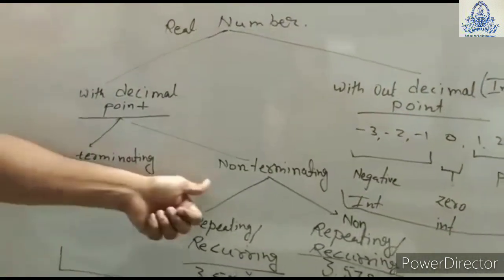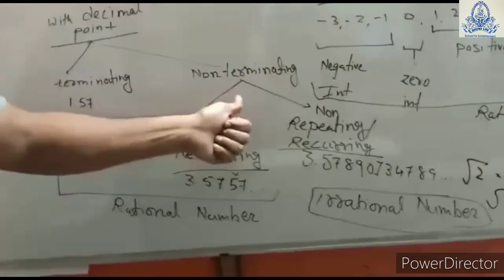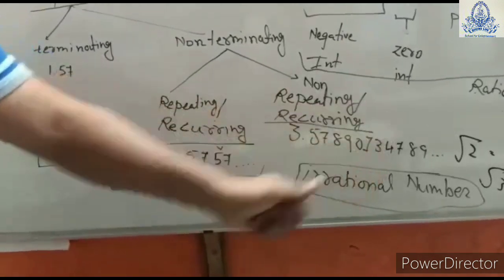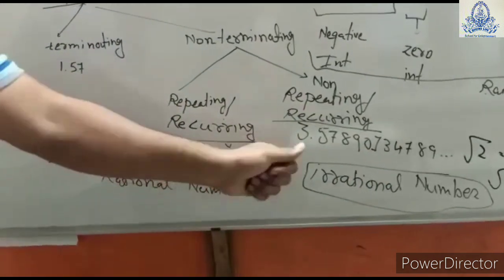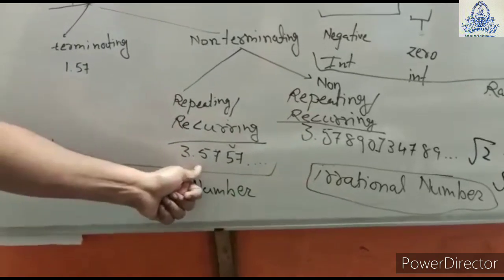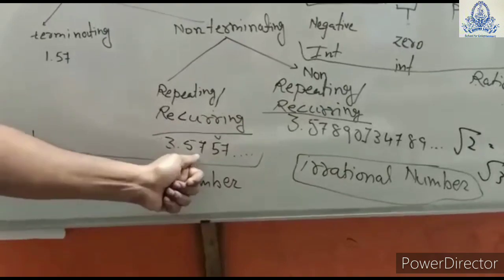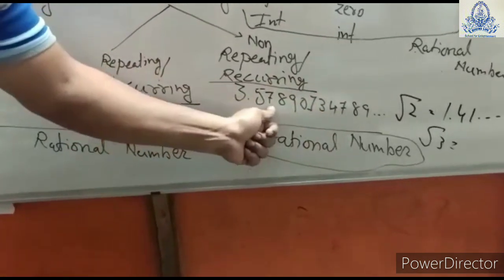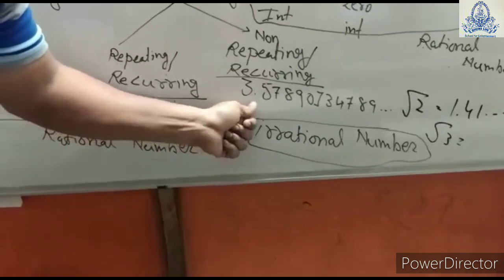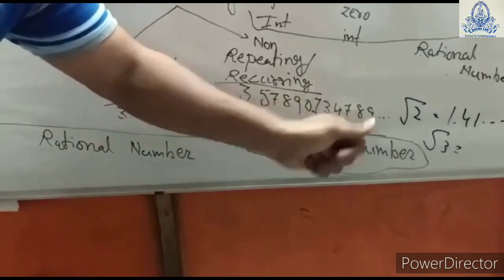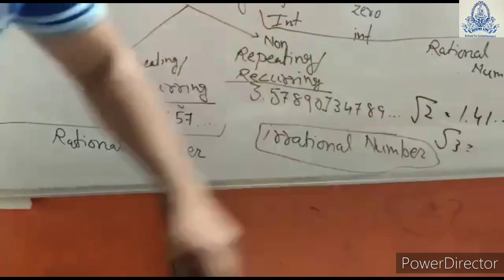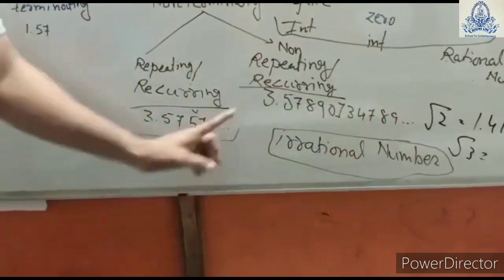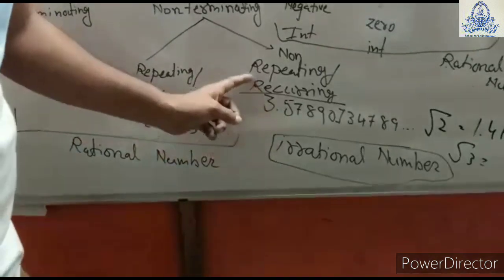Non-terminating decimals can have two parts: repeating (recurring) or non-repeating (non-recurring). In a recurring decimal, after the decimal point the sequence of numbers is repeated. In a non-repeating decimal, the sequence is not repeated — for example, 3.57890174789... goes on without any repeating sequence. So this is called a non-repeating decimal.